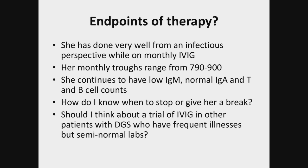How hard was it to get IVIG approved initially? I called it hypogamma globulinemia — just general hypogammaglobulinemia. It did not get approved at first and ended up needing a peer-to-peer and then an appeal, because the insurance argument was that DeGeorge patients have T-cell deficiency, not B-cell deficiency. It took a little work, but ultimately it got approved, and her frequency of hospitalization has improved so much that that has helped our repeat discussions.